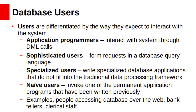Database users are differentiated by the way they interact with the database system. First, application programmers — these developers interact with the system through DML calls, written in application programming languages like Java, Python, or PHP. Second, sophisticated users such as engineers and business analysts who are familiar with the database system and use SQL-like languages to interact with the database. Specialized users are also sophisticated users — they might be scientists who write specialized database applications that do not fit into the traditional data processing framework. Naive users do not have any DBMS knowledge but frequently use DBMS applications — for example, bank clerks and people at railway reservation booking counters.